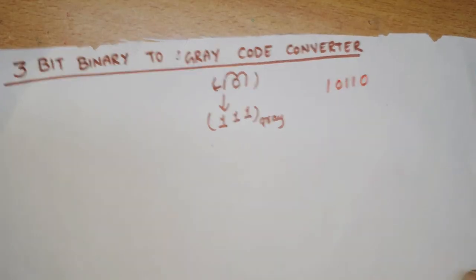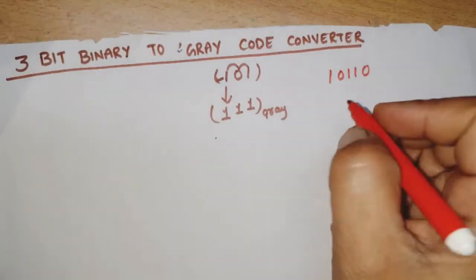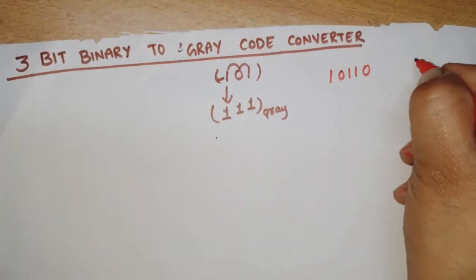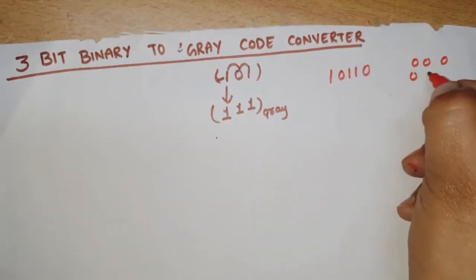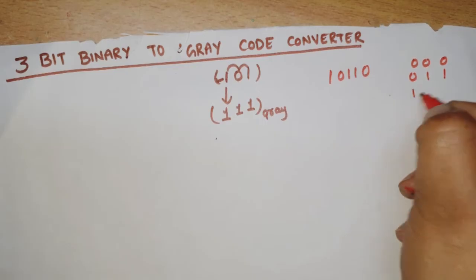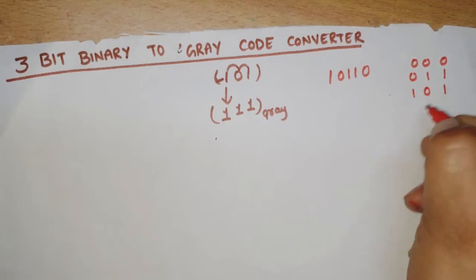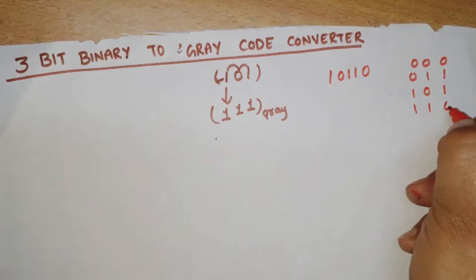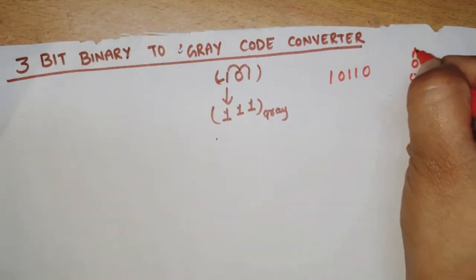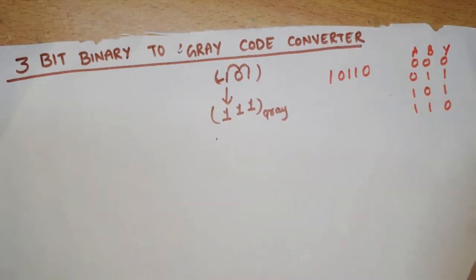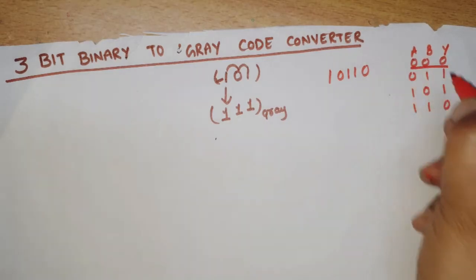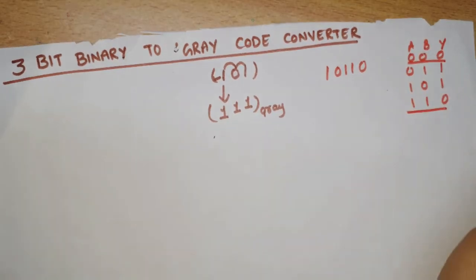Let's look at the XOR truth table. For inputs 0,0 → output 0; 0,1 → output 1; 1,0 → output 1; 1,1 → output 0. So if inputs are the same, output is zero; if inputs are different, output is one.